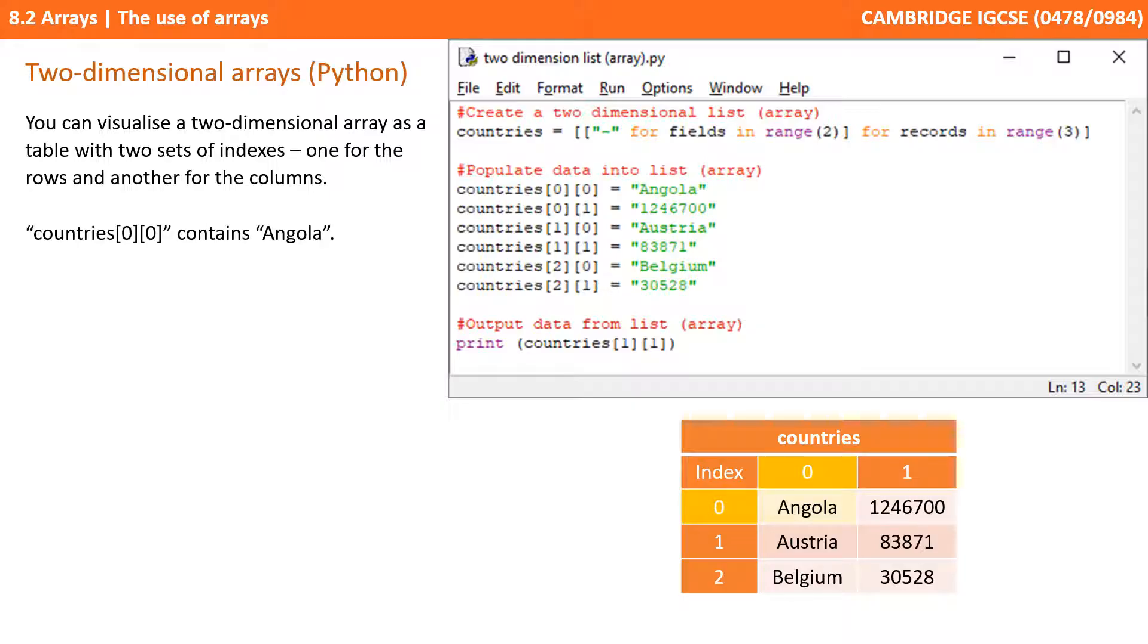So, here we can see we've got countries 0, 0 and we're supplying 2 indexes and that contains the data item, Angola. So, here we've got countries 0, 1 contains the value 1, 2, 4, 6, 7, 0, 0. And likewise, countries 1, 1 contains the value 8, 3, 8, 7, 1.